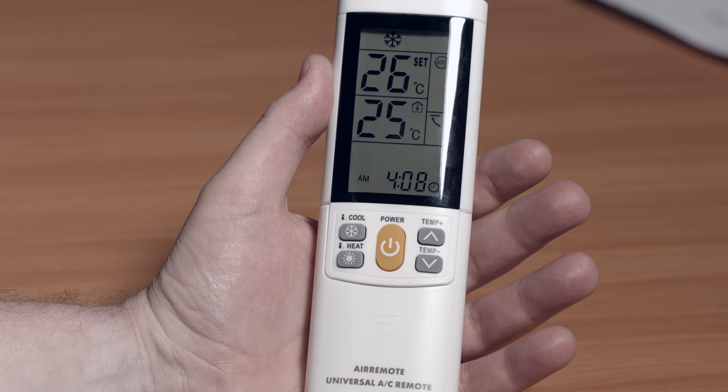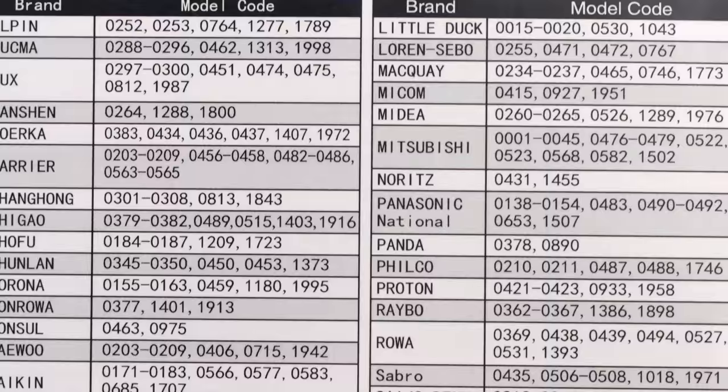You use the auto detect method if your brand of air conditioner is not shown on the back of the instruction card. If it is shown, use the much faster manual method which is shown in a separate YouTube video.